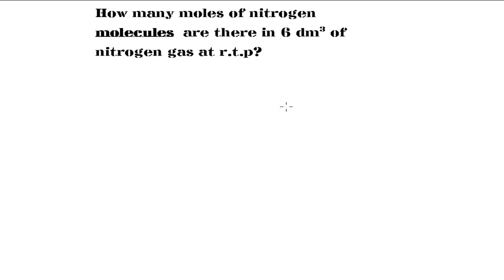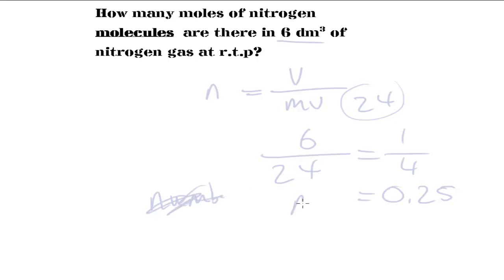So, this is a very simple division question. Using that equation, the number of moles equals the volume divided by the molar volume being 24 in this case, for decimetres cubed. What we need to do is divide this volume by the molar volume which is 24. So, 6 divided by 24, and that would give us one quarter. So, 1 over 4, which is 0.25. And so, the number of moles would be 0.25.